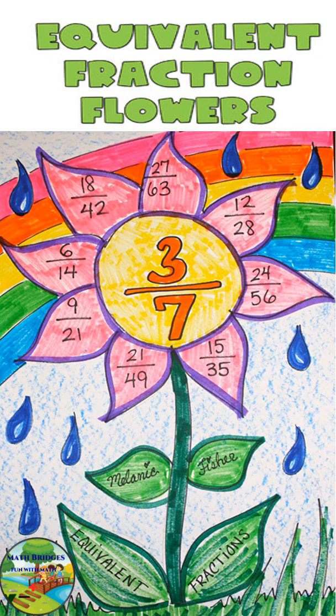See, this is one example. For 3 by 7, you can write different equivalent fractions. Here, see the petals: 3, 4, 5, 6, 7, 8 petals I have taken. So like this beautifully, you can draw it on a chart or a cell phone size color paper also. You can learn different equivalent fractions for the given number.